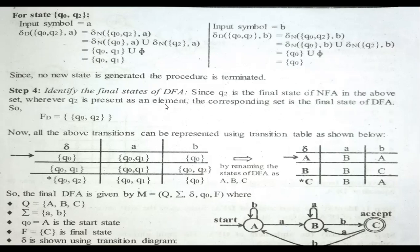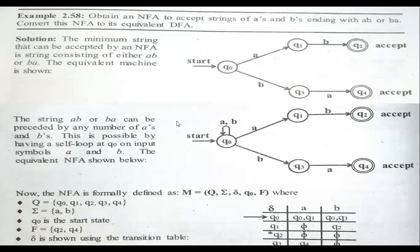Now the second problem: obtain an NFA to accept strings of a and b ending with AB or B, then convert this NFA to its equivalent DFA. This is a very important problem asked frequently in exams. We need to design the NFA first, then convert it — the procedure is longer but not more difficult.